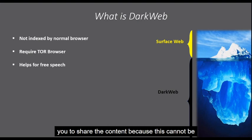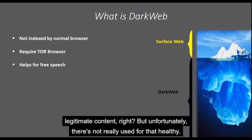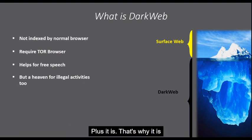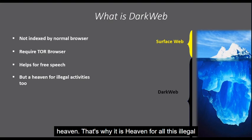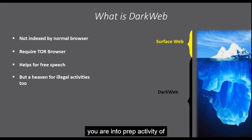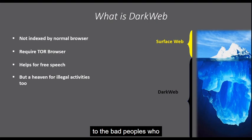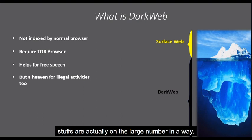With Tor browser, you can share content because it cannot be accessed by anyone — even if you share data on a dot onion site, it ensures nobody can access it. It helps you share some legitimate content. But unfortunately, it is not really used for that healthy purpose. That's why it is a haven for all kinds of illegal activities. On one side you can use it for hiding your identity for free speech or human rights activities, but on the other hand it also gives power to bad actors who want to use it for multiple illegal activities.